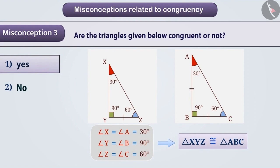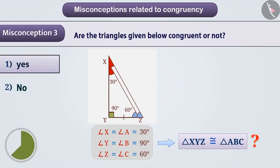If we place one triangle on another triangle, we will find that they do not completely cover each other, even if the corresponding angles are equal. So, can we call them congruent? Think, think. No.